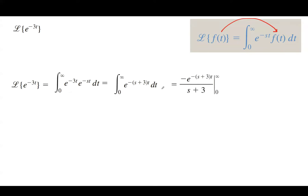As you remember from elementary calculus, this is going to be negative e to the power negative (s plus 3) times t, divided by (s plus 3), with t ranging between 0 and infinity. This is equal to 1 divided by (s plus 3). When you plug in infinity for t it becomes 0, and when you plug in 0 for t you get e to the power 0, which is 1, so you end up with 1 divided by (s plus 3).